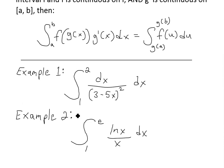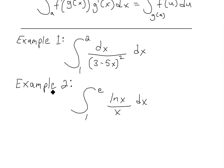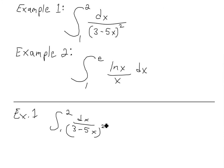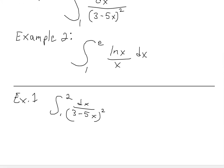I'm going to go over two examples. Example one: find the definite integral from one to two of dx divided by three minus five x, all squared. Let's write it down here. What we could do is use the substitution rule and simplify this out.